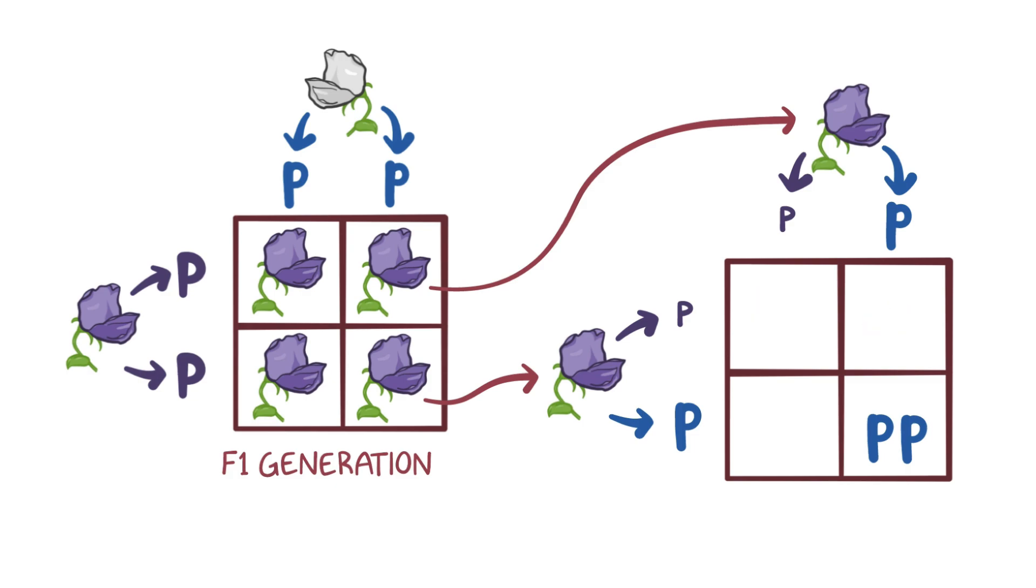The three plants with at least one capital P allele will have a violet flower phenotype, and the one plant with a homozygous lowercase p lowercase p genotype will have a white flower phenotype. This was the ratio of plants that Mendel observed in the F2 generation.